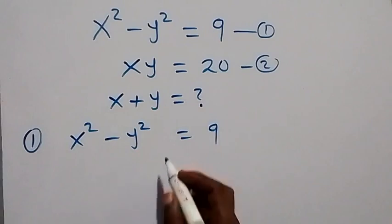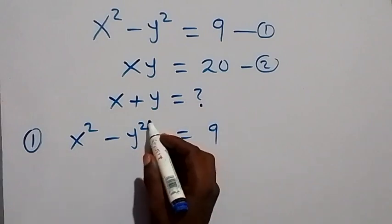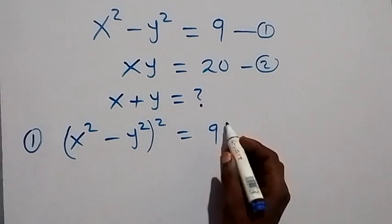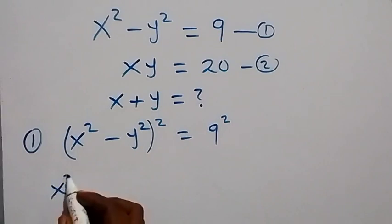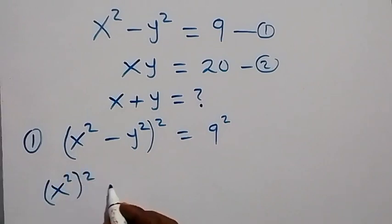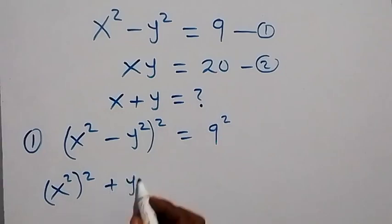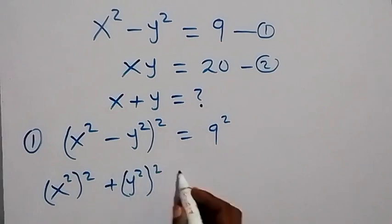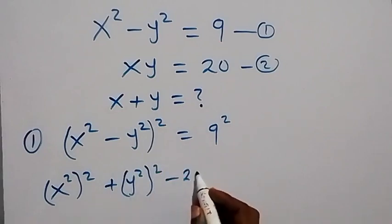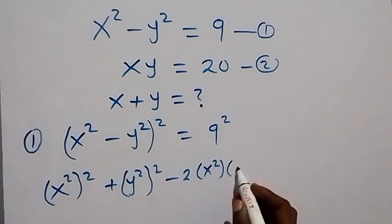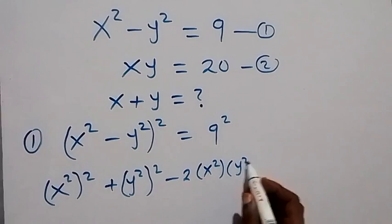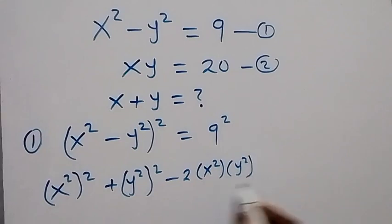From here, let's square both sides of equation 1. So we square this side and also we square this side. In the expansion here we get x squared squared, then plus y squared squared, then minus 2 times x squared times y squared.